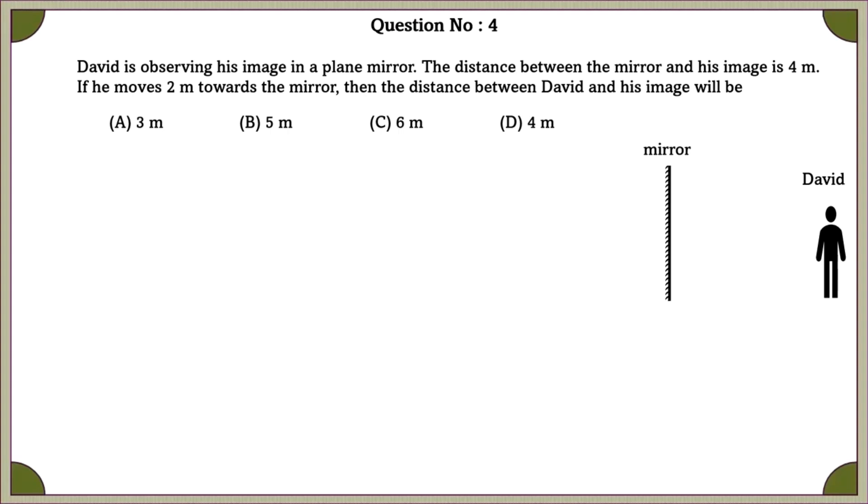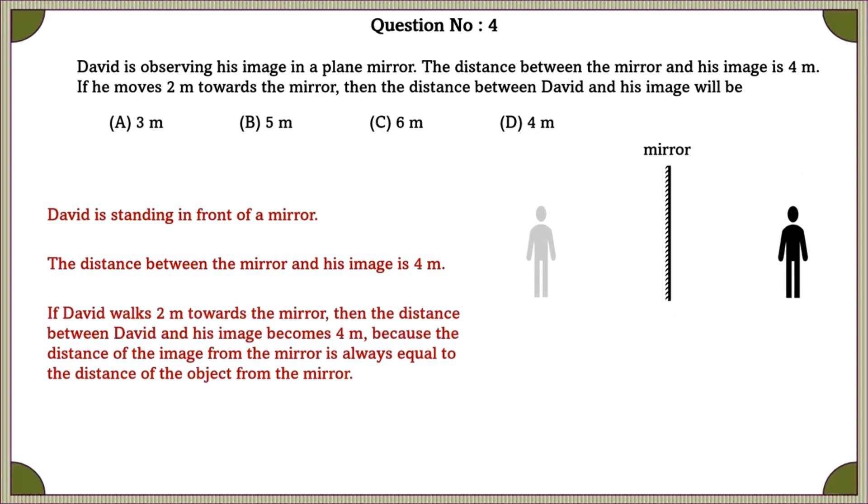Question number 4. David is observing his image in a plane mirror. The distance between the mirror and his image is 4 meters. If he moves 2 meters towards the mirror, then the distance between David and his image will be. David is standing in front of a mirror. The distance between the mirror and his image is 4 meters. Because the distance of the image from the mirror is always equal to the distance of the object from the mirror.